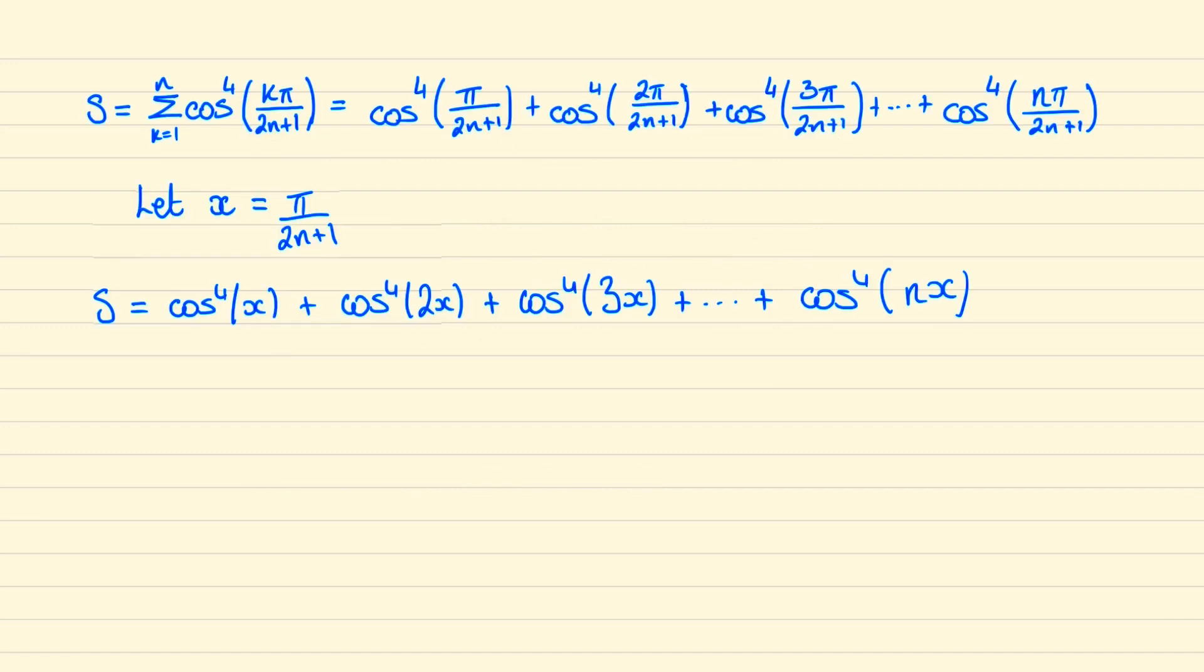We'll start by letting s be the sum of our series, and we'll also say x is π over 2n plus 1 for simplicity. What we would like to do here is to be able to convert all these cosines which are currently a power of 4 into just powers of 1.